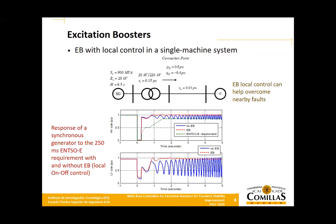We have here an application of the excitation booster in the case of a single machine infinite bus system, addressing the most demanding requirement of the NSOE grid code. That code requires the machine to be stable in case of a 250 milliseconds fault. In blue, you have the system voltage response — the machine is unstable under this fault.